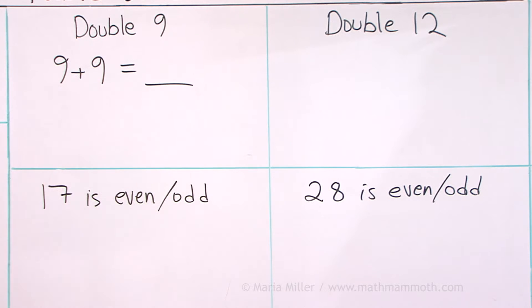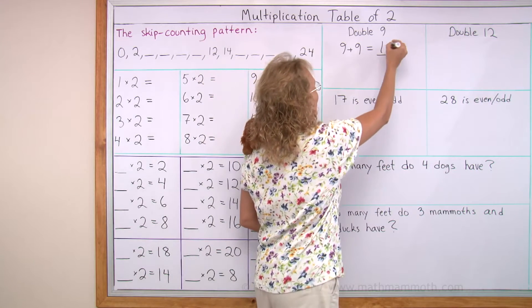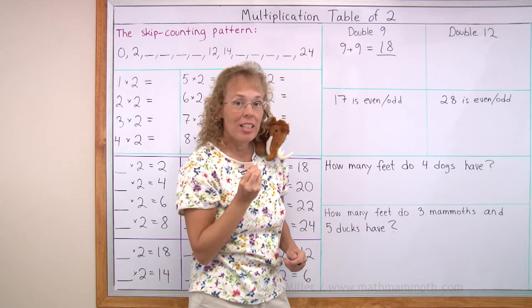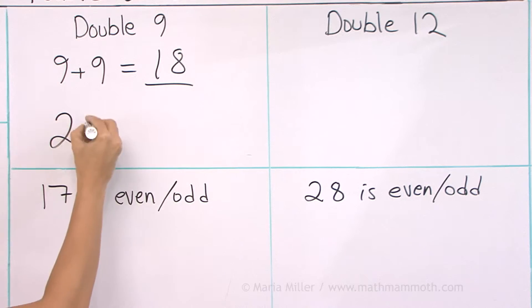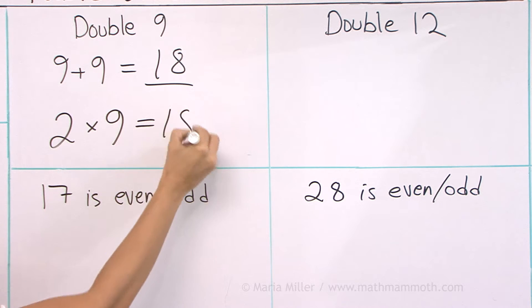Double nine means nine and nine, right? That's 18. And we can always write a multiplication where we have two times the number, two times nine equals 18.